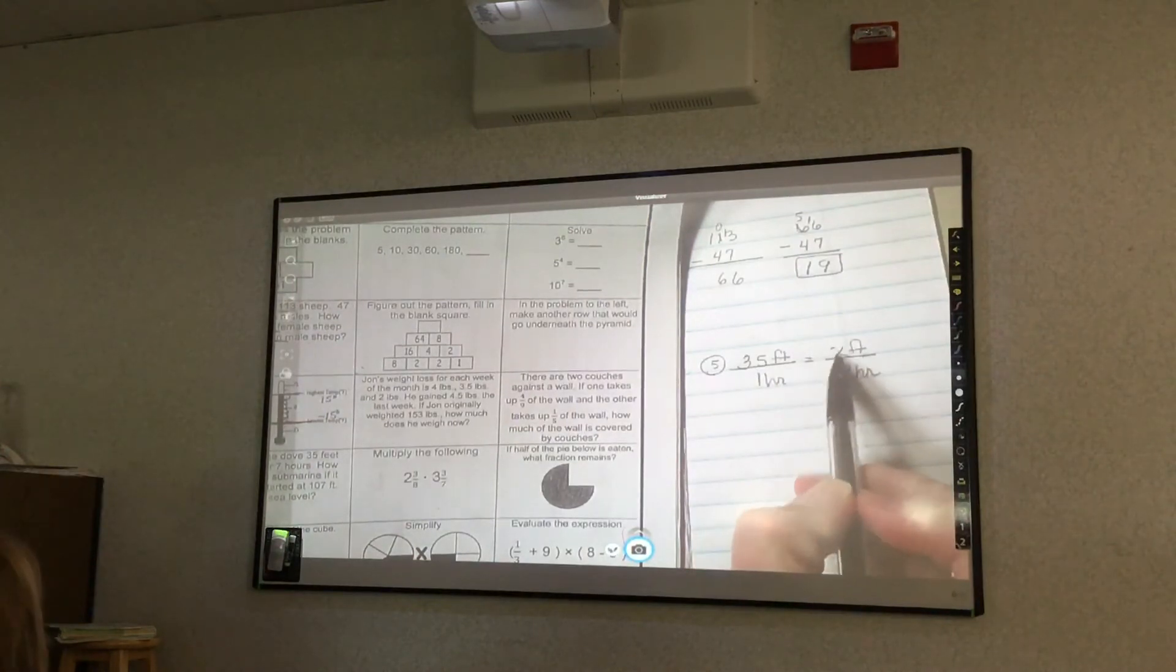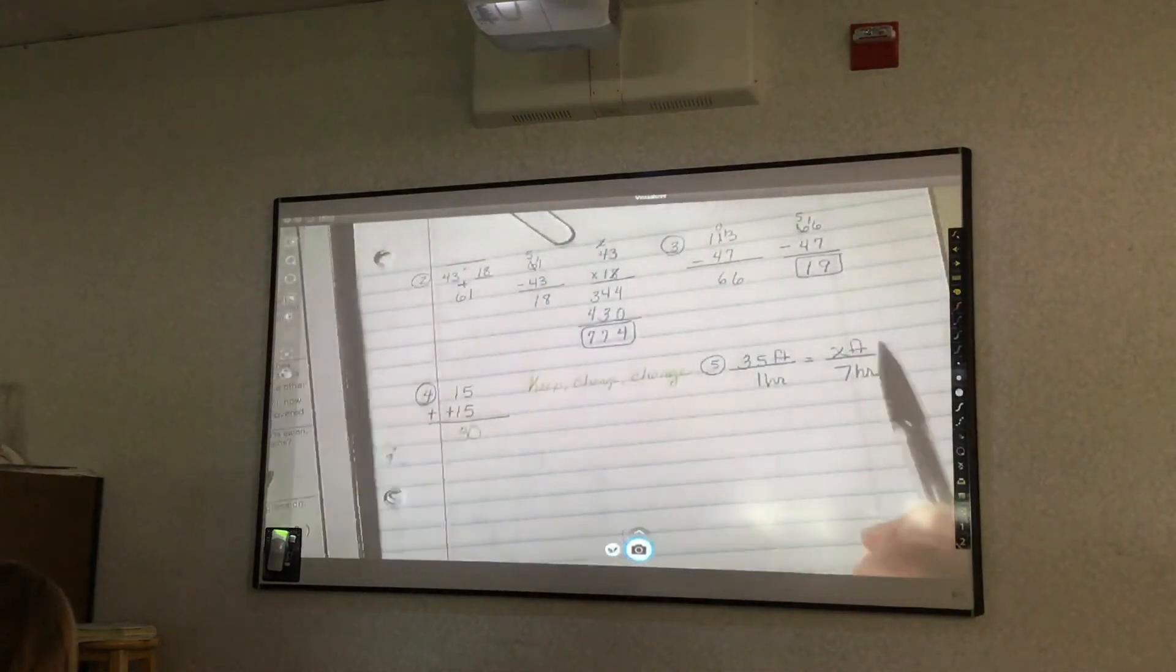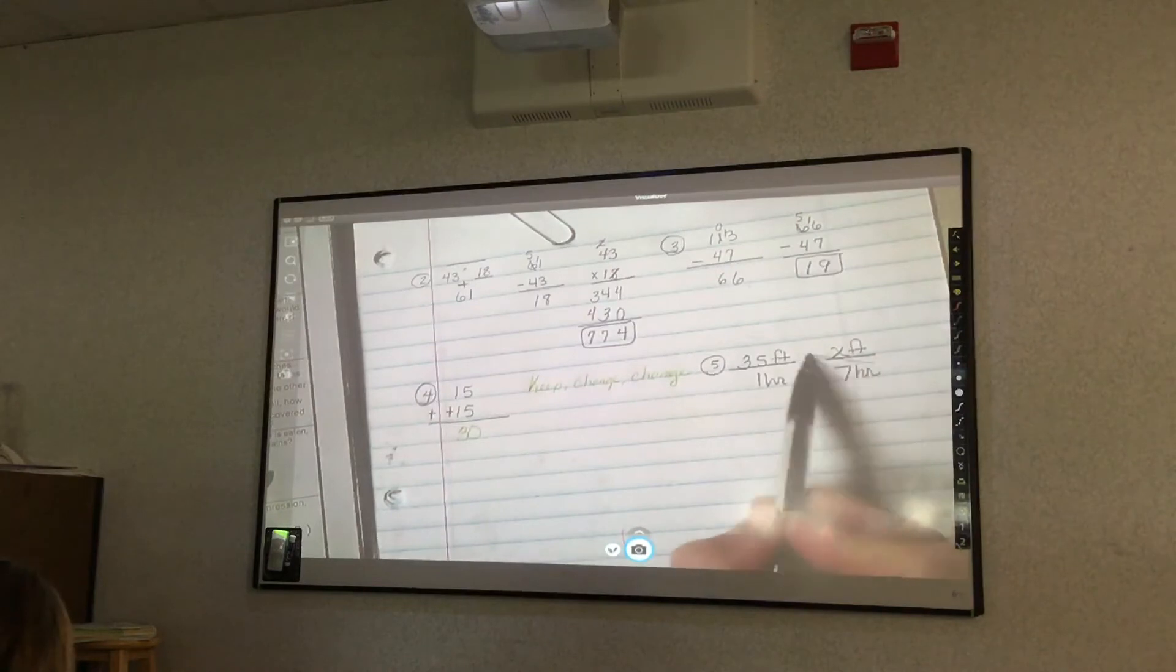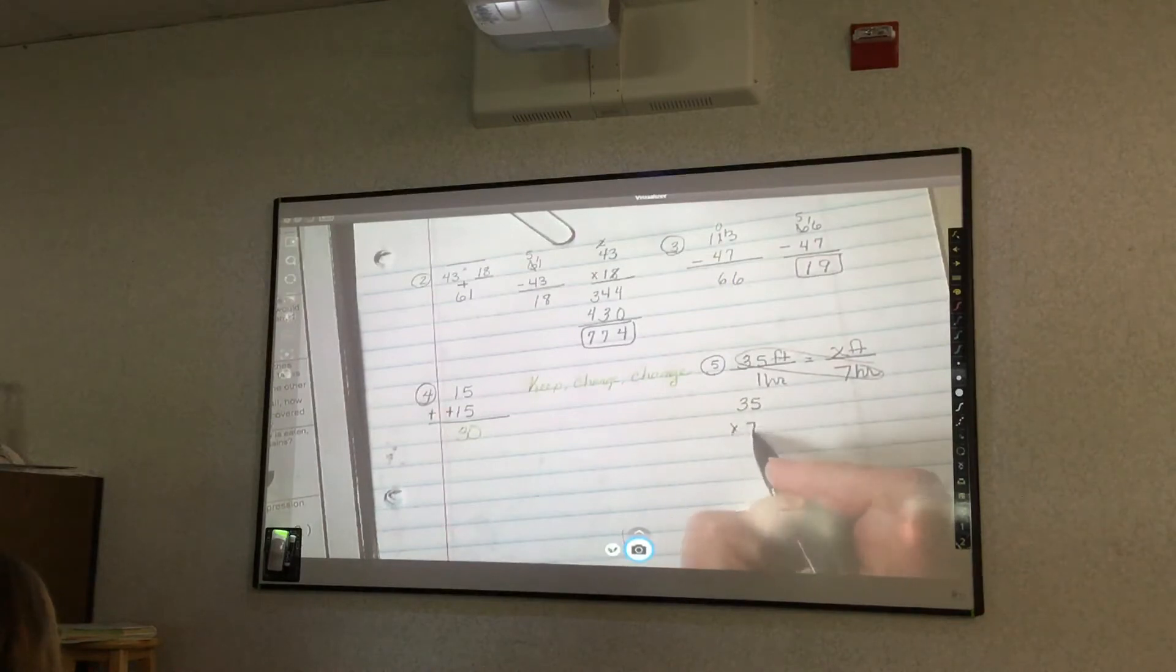This is my X. I don't know that. So I'm going to draw a butterfly, 35 times 7. 7 times 5? 35. 7 times 3? 21. 21 plus 3 makes 24.